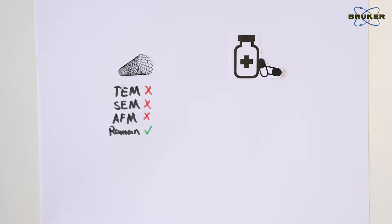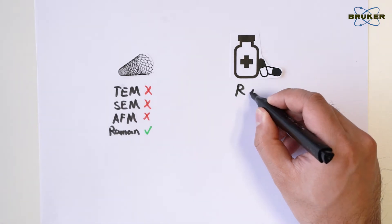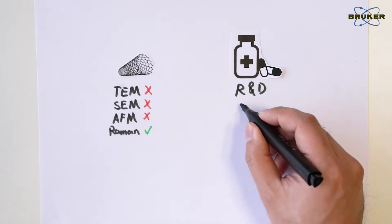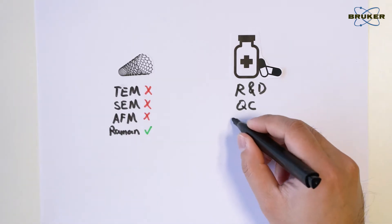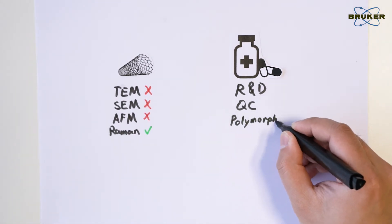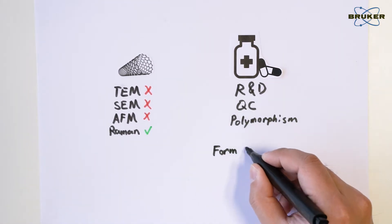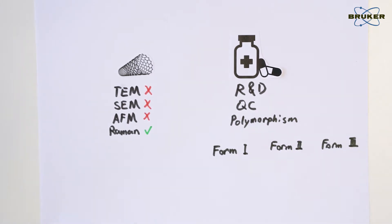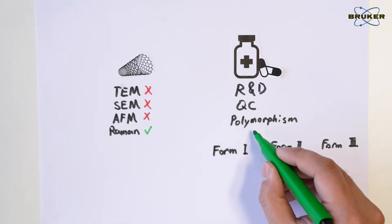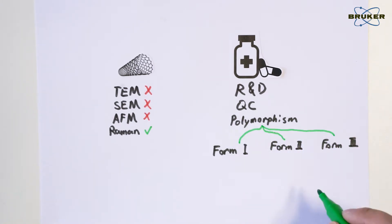In the pharmaceutical industry, both development and quality control of drugs are the focus of Raman microscopy. The study of polymorphism is particularly important as it is critically linked to drug formulation stability and safety.